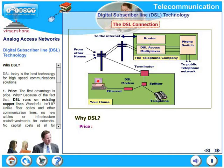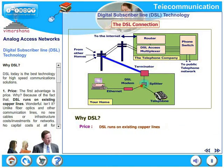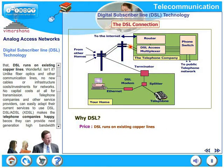Price — why? Because DSL runs on existing copper lines. Unlike fiber optics and other communication lines, no new cables or new infrastructure, no additional cost, no additional investments for networks. No capital cost at all for transmission.